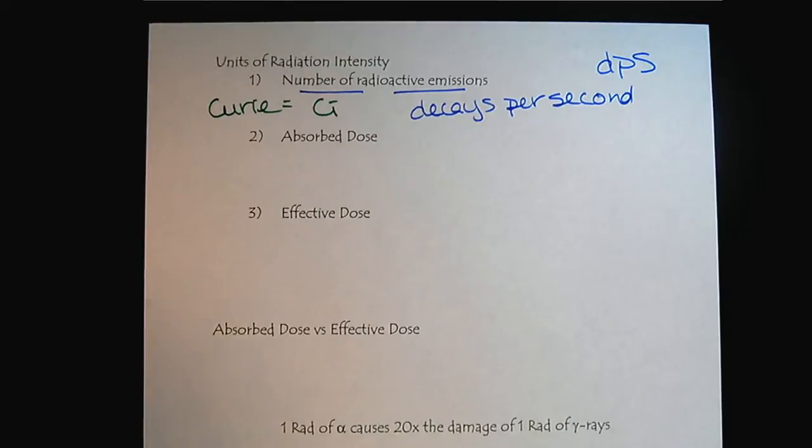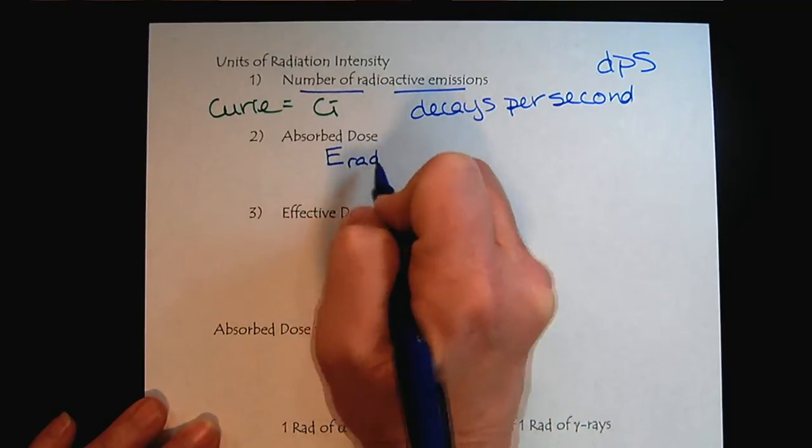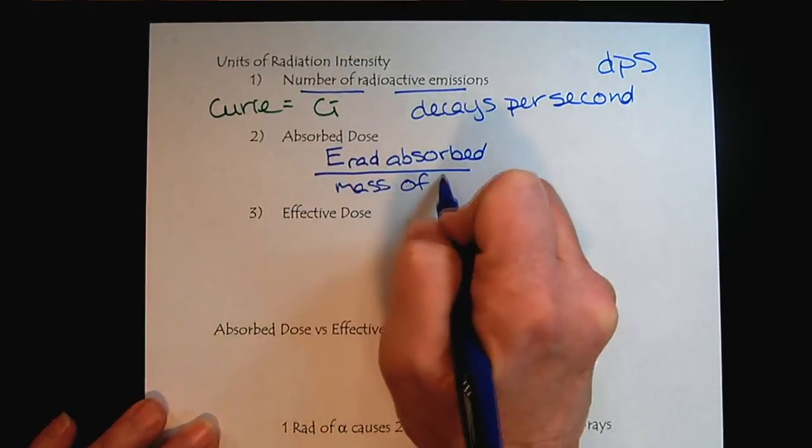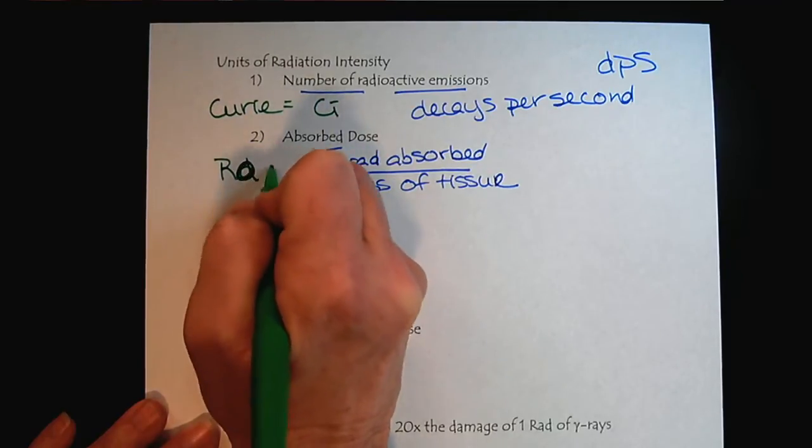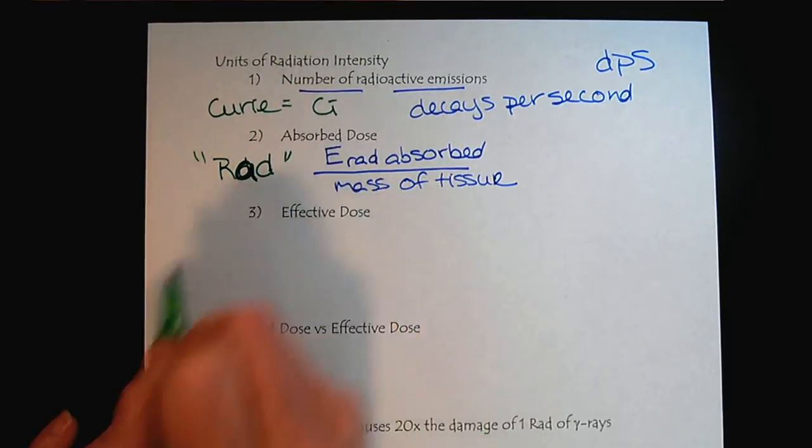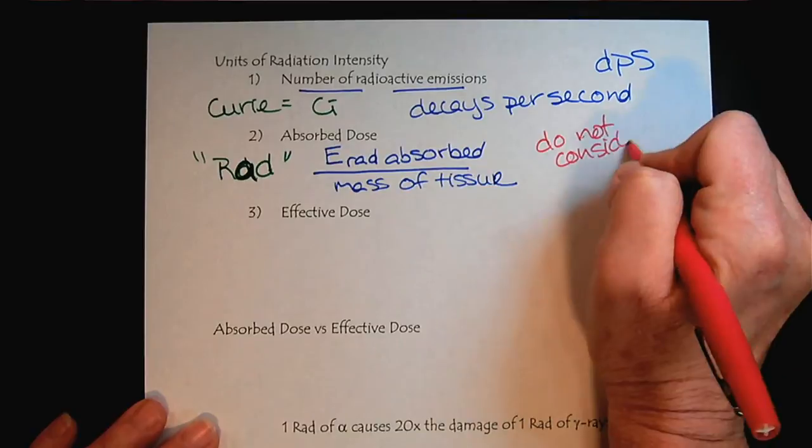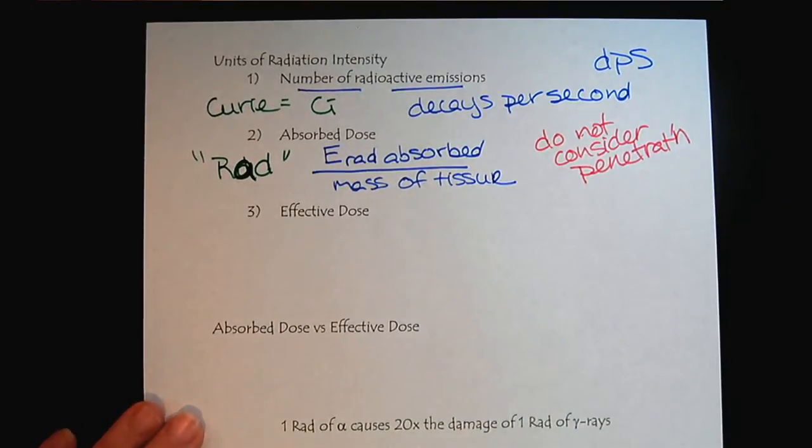Then we can look at the absorbed dose. So that's the energy in rads absorbed over the mass of tissue. This is where we'll use the unit rad. Now, rads are very common. Make sure that everyone sees that's an A. The thing about rads, though, is they do not consider penetration. We've seen on the previous page that penetration is a big deal.